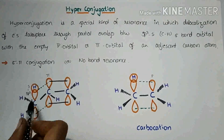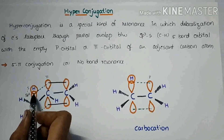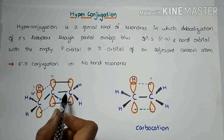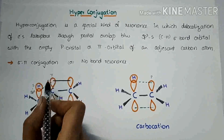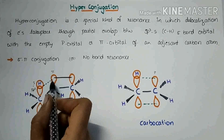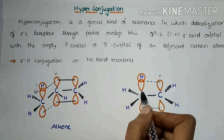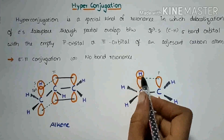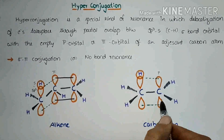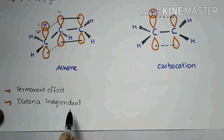In alkene, the sp3 sigma bond orbital partially overlaps with the pi bond between C and C. In carbocation, it is the sp3 sigma bond orbital with the empty p orbital. This is a permanent effect and it is also distance independent.